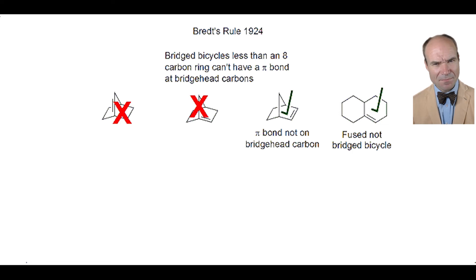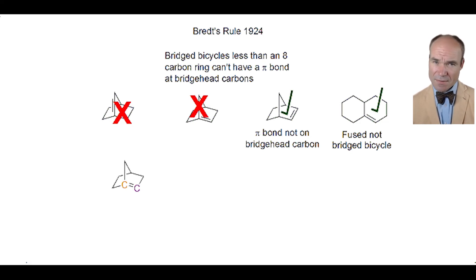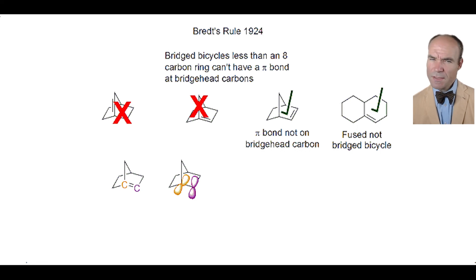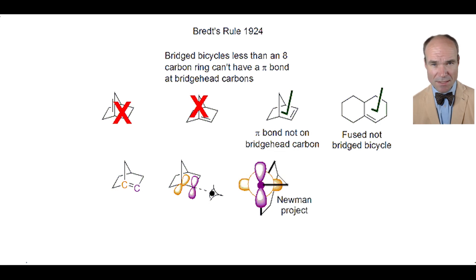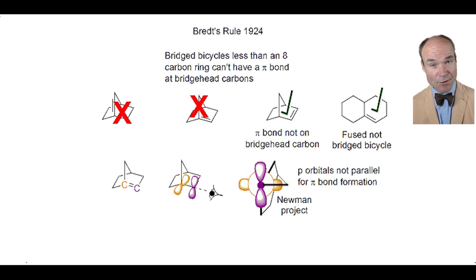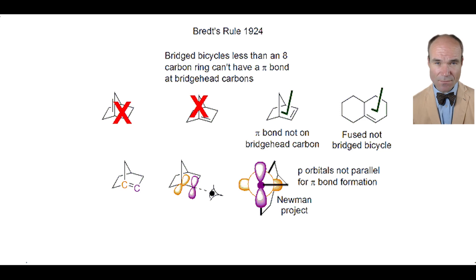Why does this happen? Let's take a look at one of these forbidden molecules. We're going to take the pi bond and think about it as its components, namely the two p orbitals. What's the spatial relationship between these two p orbitals? We're going to look down the critical bond and imagine it as a Newman projection. Now it's much easier to see the problem: the two p orbitals are not parallel to each other, and to form a pi bond they must be parallel. So that explains Bredt's 1924 observation.